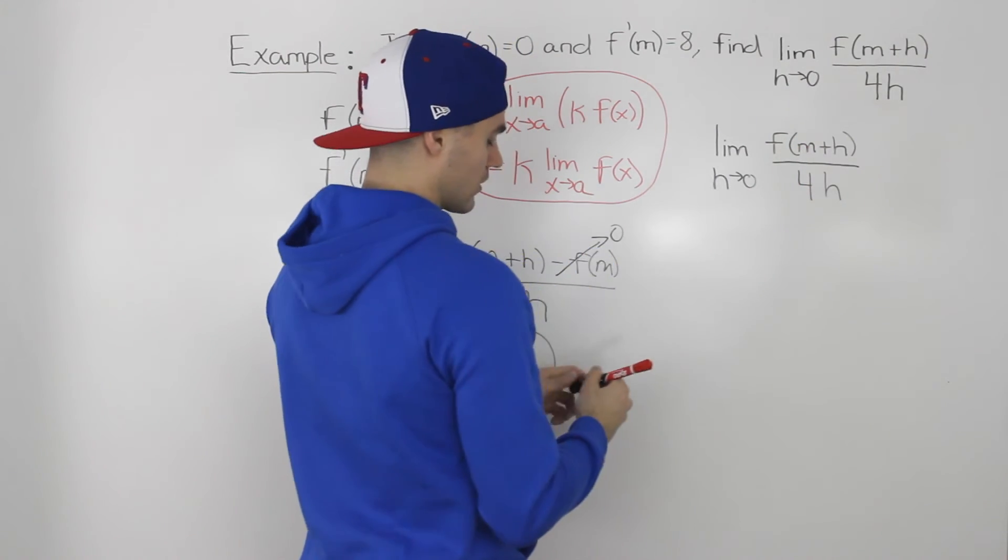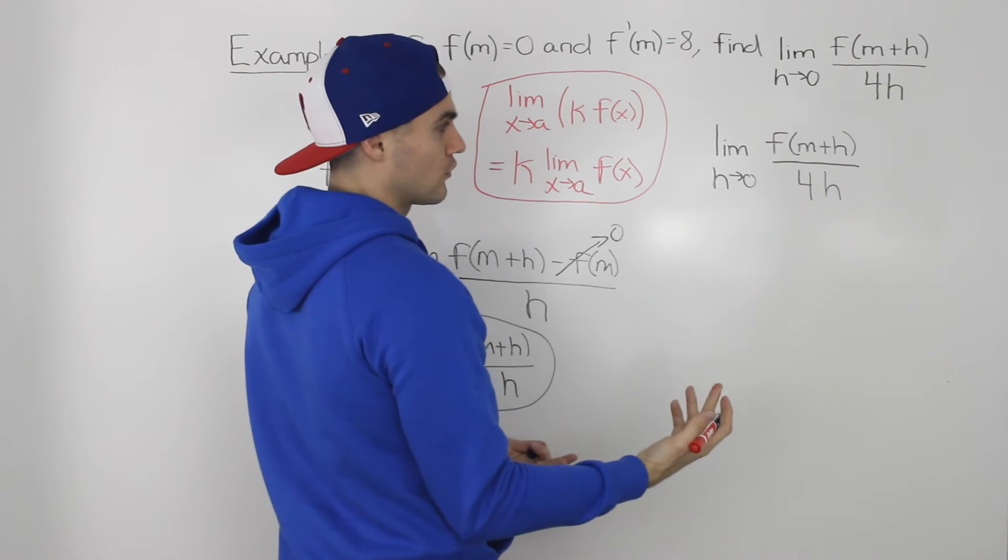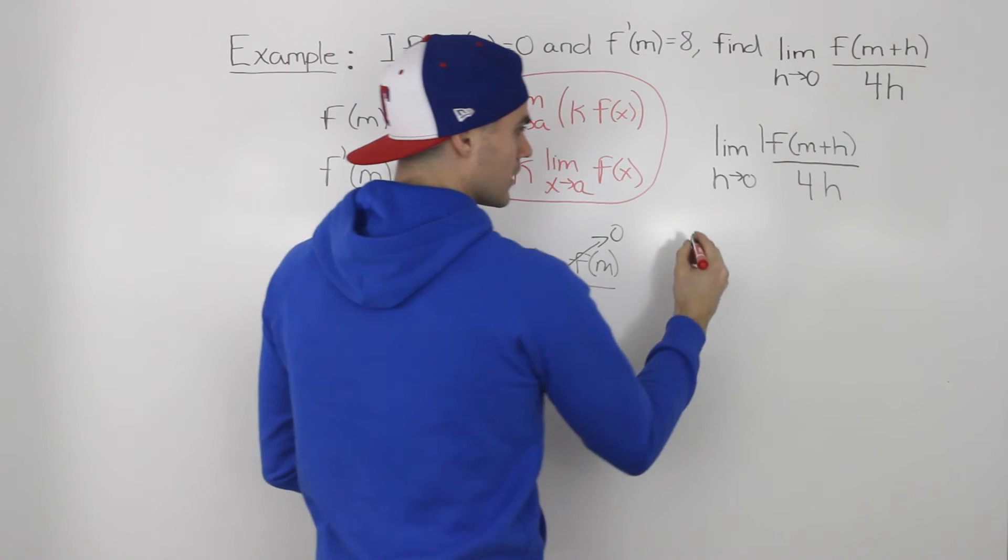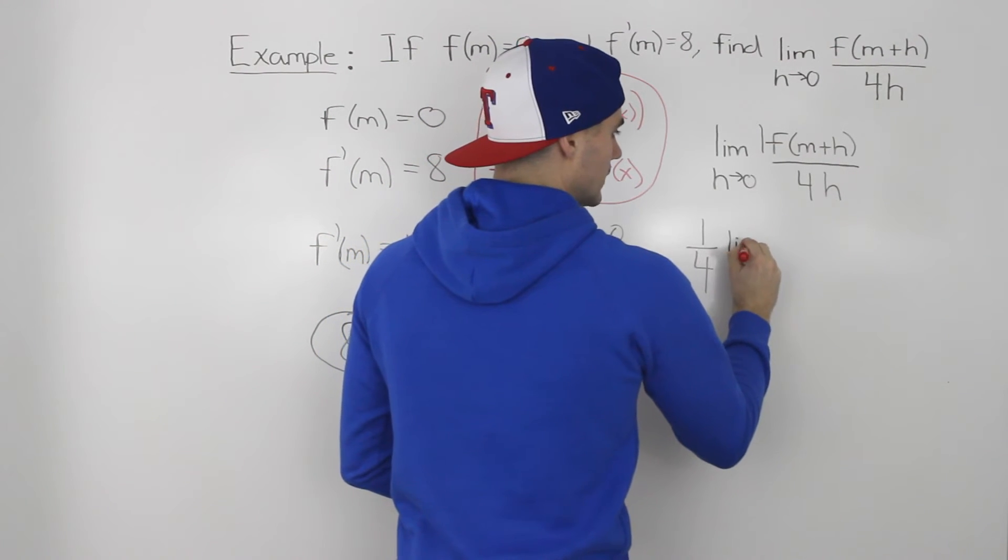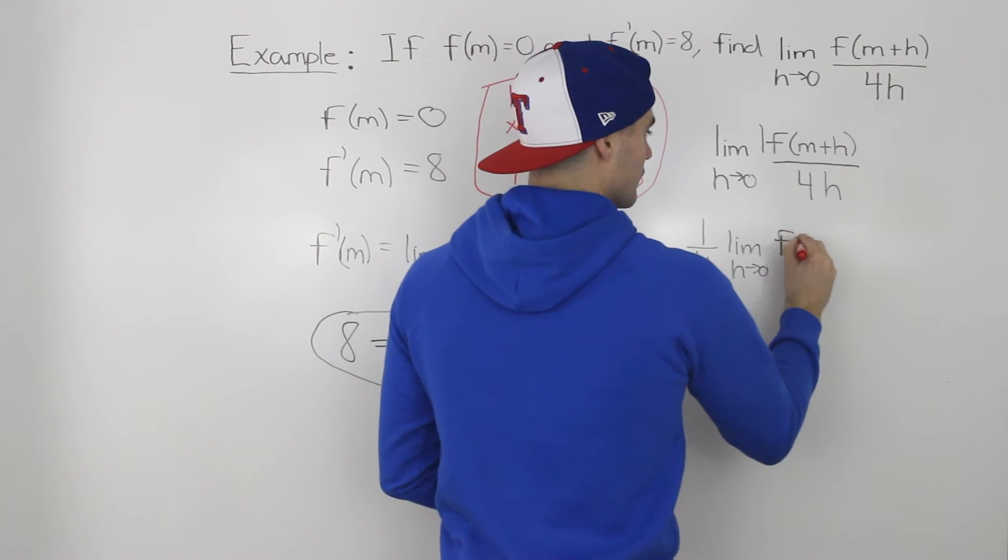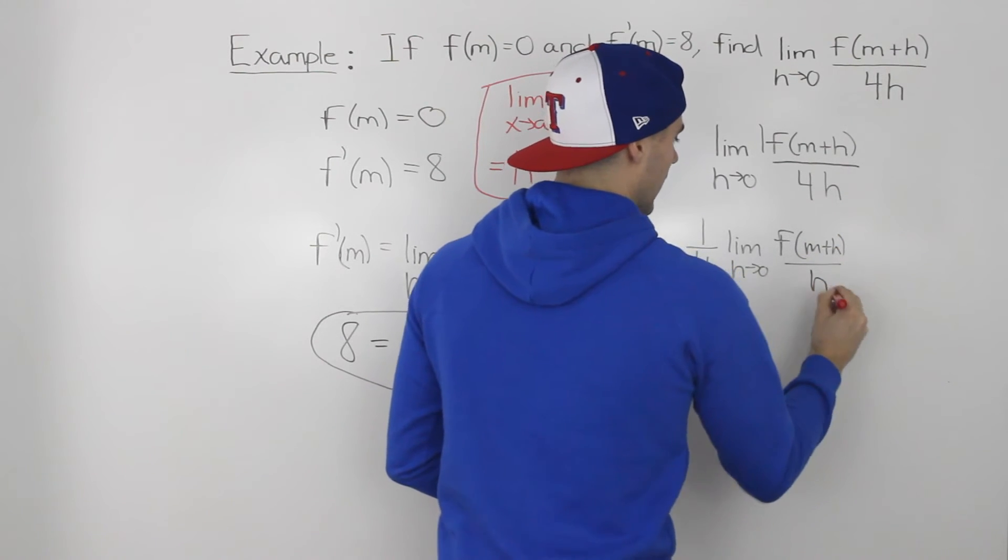This 4 is sort of like we're taking this limit and multiplying it by 1 over 4. So there's like a 1 in the numerator and then there's 4 in the denominator. So we would take out a 1 over 4 and we'd have the limit as h goes to 0 of f of m plus h all over h.